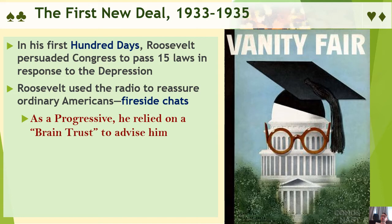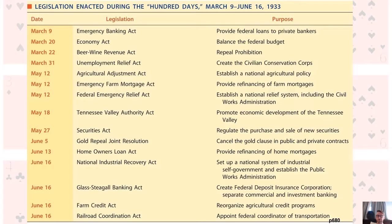Roosevelt did not do all of this alone. He was a progressive. He had begun his political journey as a progressive, and like progressives before him, he relied on expertise and scientific management of human problems in order to address the difficulties of the Great Depression. We have called these advisors his brain trust. You will see them referred to in images, often wearing glasses — giving them their nerdy bona fides — as well as a graduation cap, the formal name for which is a mortar board.